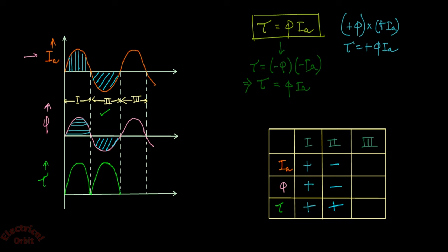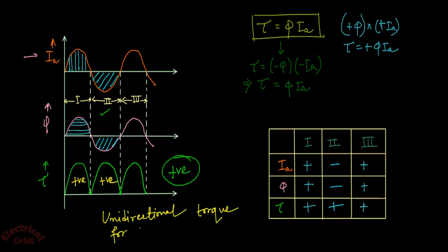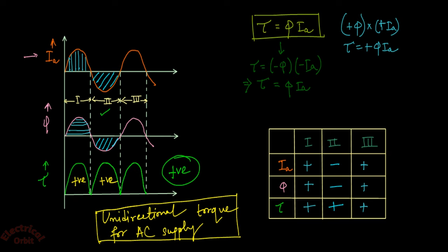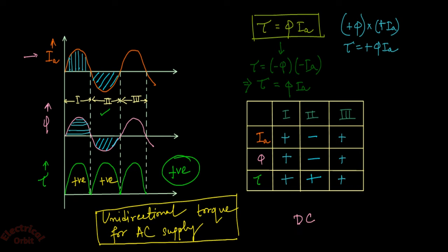The same logic applies to interval three: current is positive, flux is positive, and torque is also positive. So the torque waveform is always positive. This means whenever the interval is positive we get positive torque, and whenever the interval is negative we also get positive torque — meaning we get unidirectional torque even with AC supply.